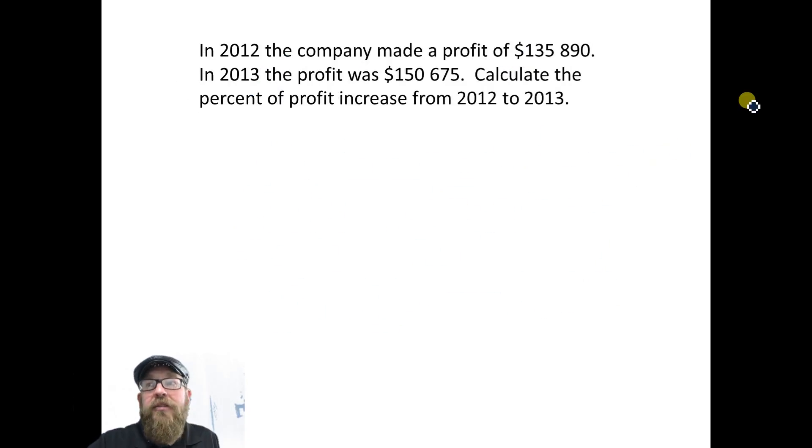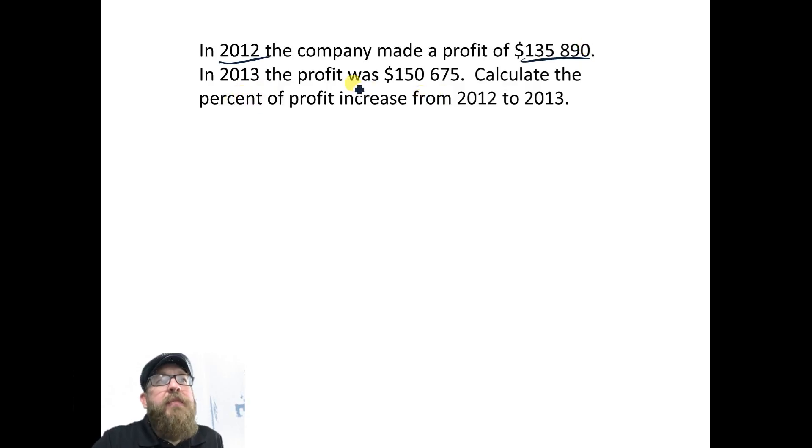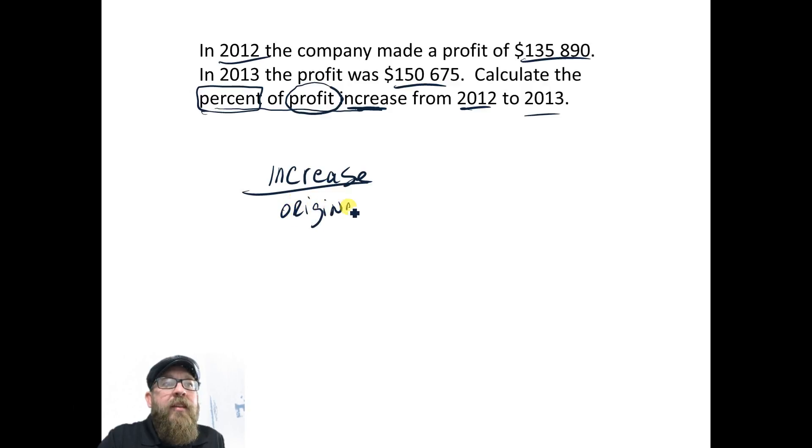Last one we're going to do for now. Let's just go ahead and dive in. In 2012, the company had a profit of $135,890. In 2013, they had a profit of $150,675. And we're being asked to calculate the percent of profit increase from this to this. A lot of times when you're being asked to calculate percent of profit increase, they don't actually give you the profit, but in this problem they do. So really all we're doing is we're figuring out the percent of increase. The way you do that is you have to figure out the increase and you divide it by the original. So the increase would be $150,675 minus the original, and then all of that divided by the original.